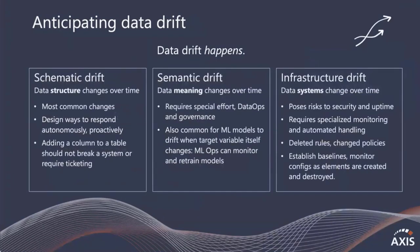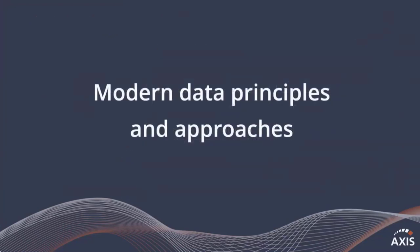Last up is data drift — it happens in three forms. Schematic drift is the change in our data schemas, like a column being added or dropped. Semantic drift is a change in the meaning of our data over time. And infrastructure drift is the change in our data systems over time, whether a small configuration change or swapping out an entire data platform upstream or downstream. Our platforms must be able to handle data drift in a seamless way. Modern data architecture is premised on continuous improvement, and continuous improvement means continuous change. Our systems need to handle this change resiliently — whether a single column added to a table or an entire platform gets swapped out — with very little downtime or none at all. And with that, I'll pass it off to Rich to cover principles and approaches.